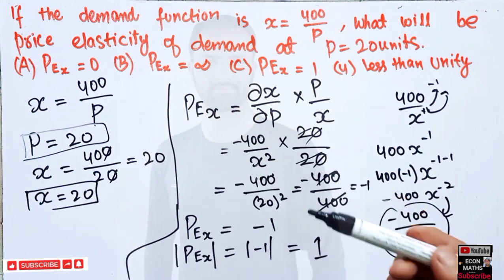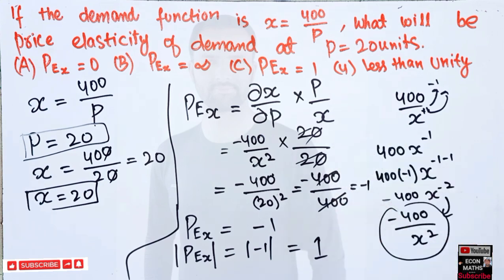So in this case, the price elasticity of demand will be 1. So it should not be confused here. Whenever we take the absolute value, we mean there is a negative relationship between price and quantity demanded. To make things simpler, we just take the absolute value.